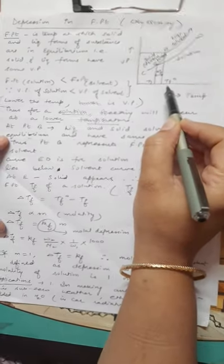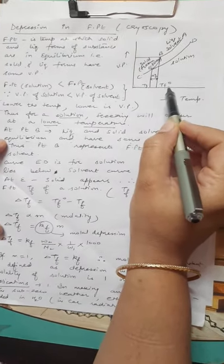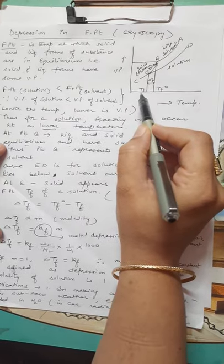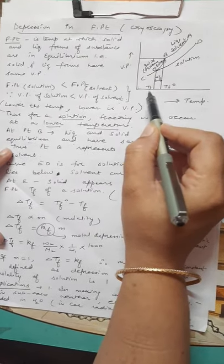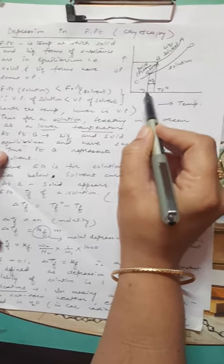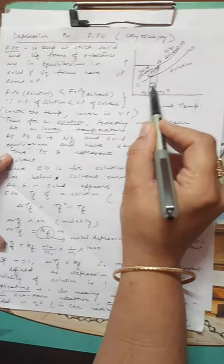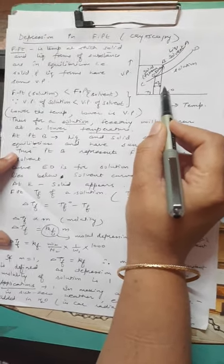This TF° is representing freezing point of pure solvent, whereas TF is for freezing point of solution, and the difference between these two points is called depression in freezing point, that is ΔTF.